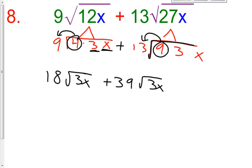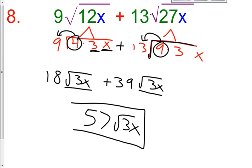So, now class, can you combine like terms? Hopefully, you say yes because our radicals are exactly the same. 18 square root of 3x plus 39 square root of 3x. Square root of 3x and square root of 3x, we can add 18 and 39. 18 plus 39 is 57 square root of 3x. And this is our answer for number 8.